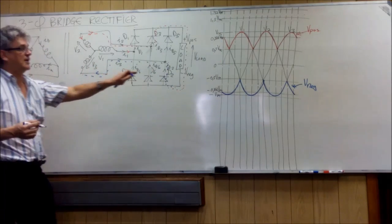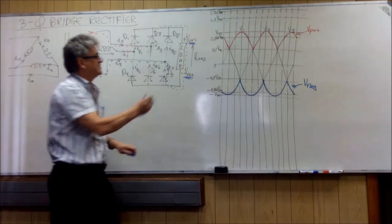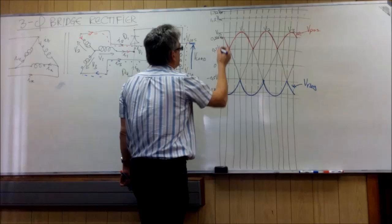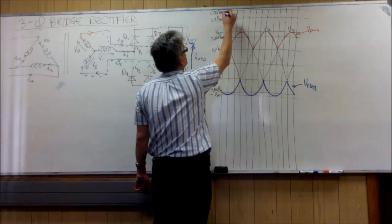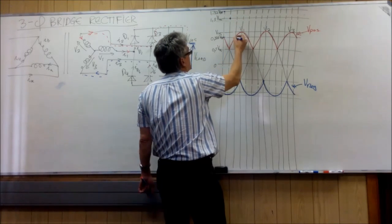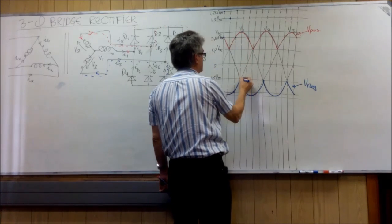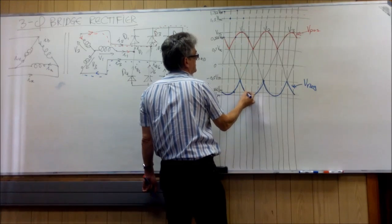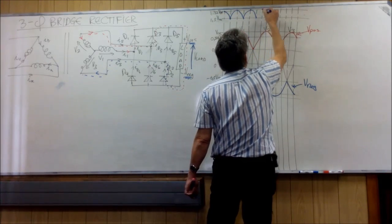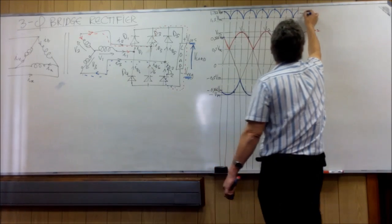When I go and look at the load, I see that v load is v positive minus v negative. Because I must subtract that which is the end of the arrow from the start of the arrow. So let's go and do it. 0.866 minus minus 0.866 gives us 1.732. 0.5 minus minus 1 gives us 1.5. 0.866 minus minus 0.866 gives me 1.732. 1 minus minus 0.5 gives me 1.5. So there I have an idea of how it will look.